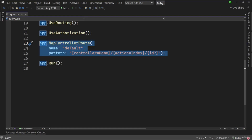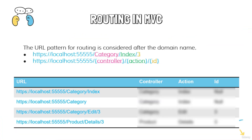Routing defines that when you type something in the URL, where it should send that request. In an MVC application, the URL pattern is considered after the domain name — localhost and port number is the domain name. Anything after that is the routing pattern. The typical route in an MVC application is: first the controller name, then the action name.